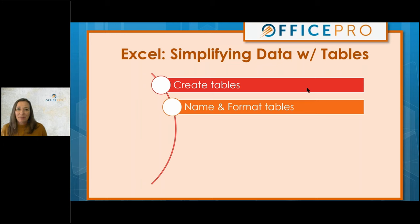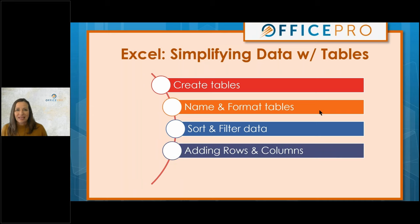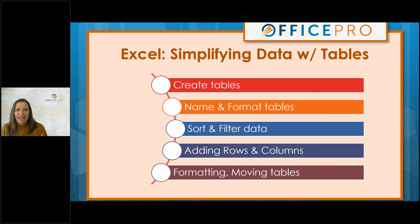I'll show you how to name those tables that you've created and format the tables using our table styles features and style options features. After we name and format that table, we're going to use some of the features when we change our data into a table, like sorting and filtering. Additionally, we'll learn how to navigate our data while it's in a table — add and remove rows, add and remove columns, reorganize. There's also helpful information about formatting the table components, selecting separate rows and columns and headers, and moving that table around the spreadsheet.